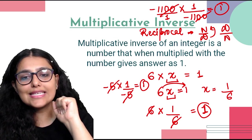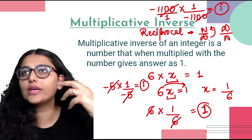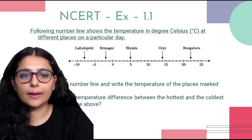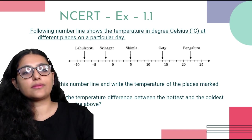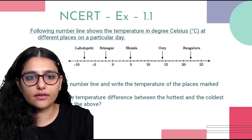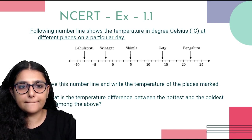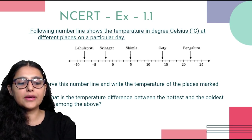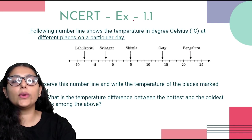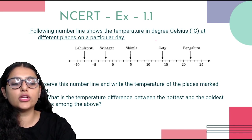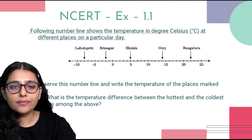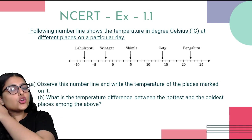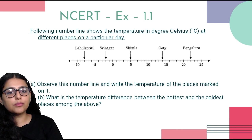Let's solve some NCERT questions. The following number line shows the temperature in degrees Celsius at different places on a particular day — Lahul Spiti, Srinagar, Shimla, Ooty, Bangalore. We need to observe the number line and write the temperature of each place.